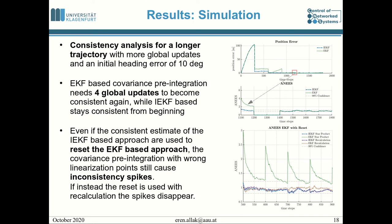Even if we use the consistent estimate of the IEKF as a starting point for EKF-based computations, the wrong linearization points in the EKF's covariance pre-integration still cause large inconsistency spikes after their application. Instead, if we use recalculation for the EKF starting from the consistent IEKF estimate, these spikes disappear — indicating that the inconsistencies are caused by the wrong linearization points in the scattering matrices built by the EKF with wrong linearization points.